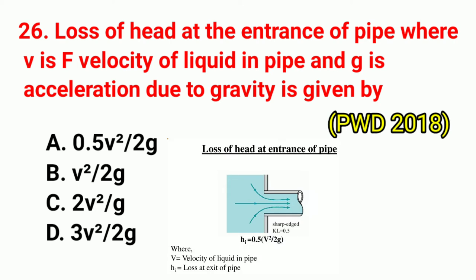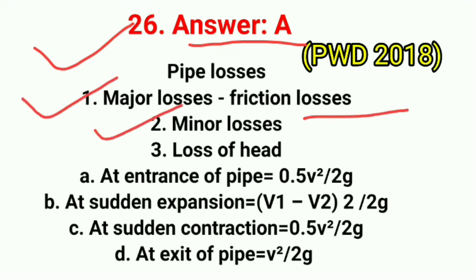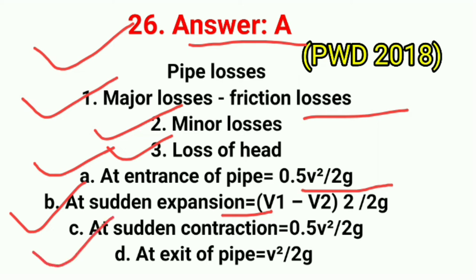Question No. 26. Loss of head at the entrance of a pipe, where v is velocity of liquid in pipe and g is acceleration due to gravity, is given by? Correct answer is option A: 0.5v²/2g. Different formulas for pipe losses: at entrance of pipe = 0.5v²/2g; at sudden expansion = (v1 - v2)²/2g; at sudden contraction = 0.5v²/2g; at exit of pipe = v²/2g.